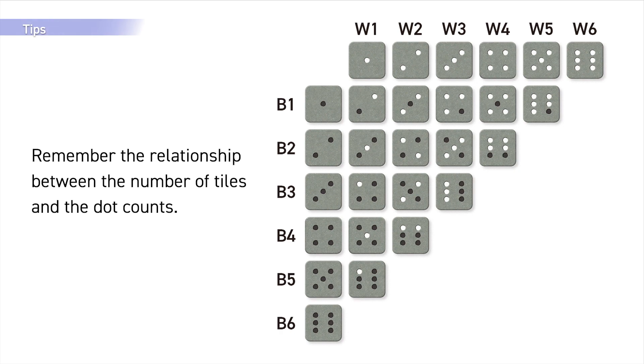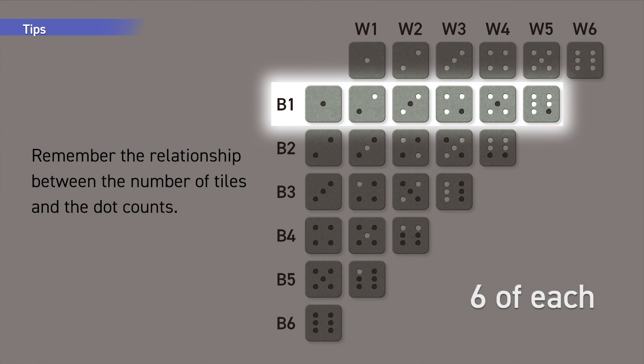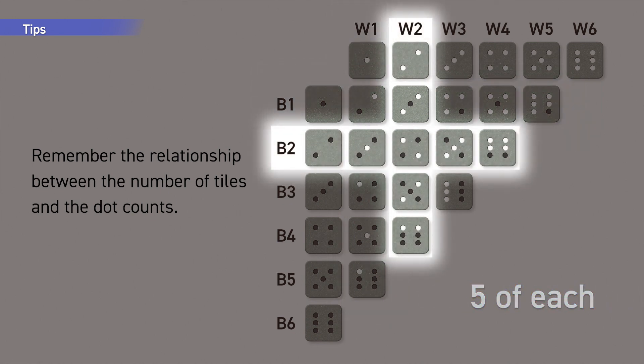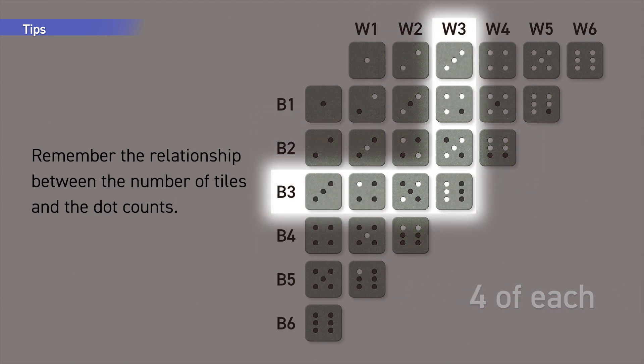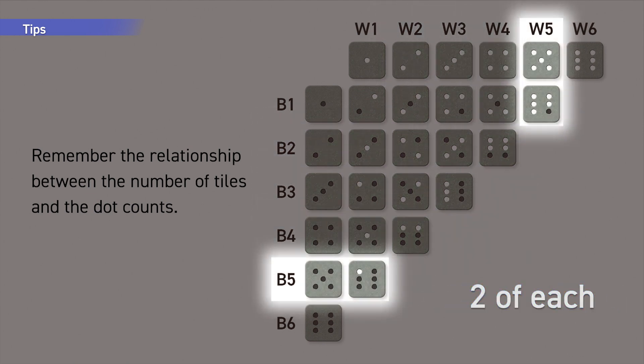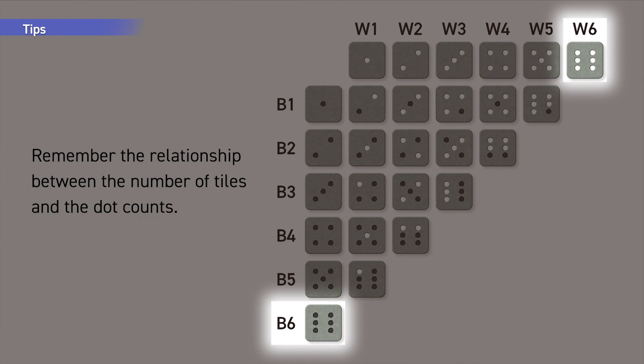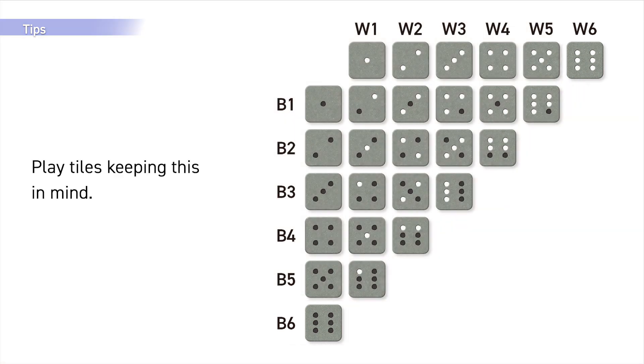Tips: Remember the relationship between the number of tiles and the dot counts. Six each of one dot black and white tiles, five each of two, four each of three, and one each of six. Play tiles keeping this in mind.